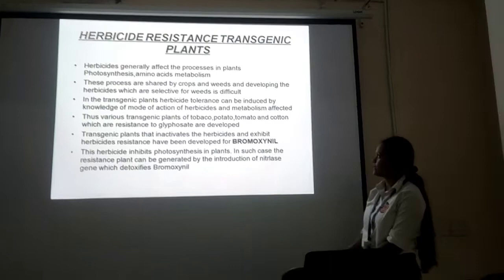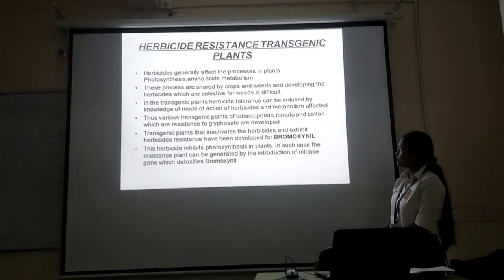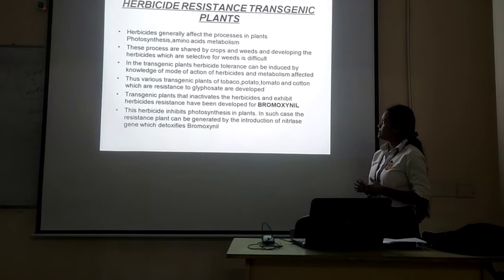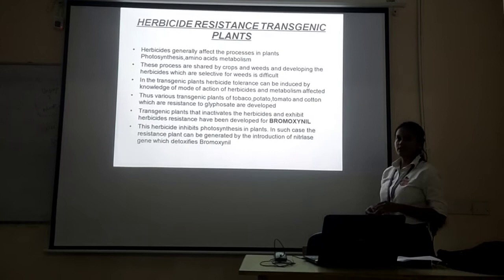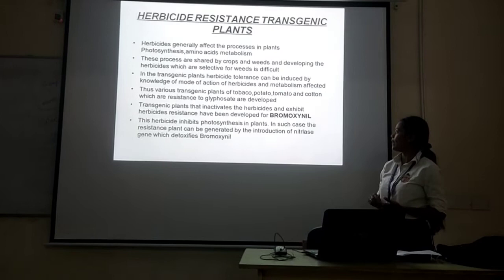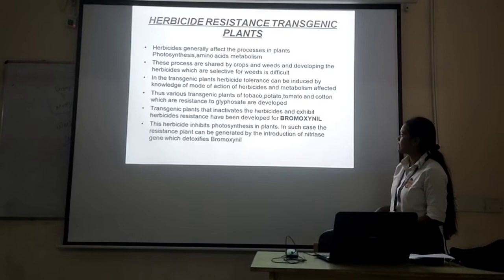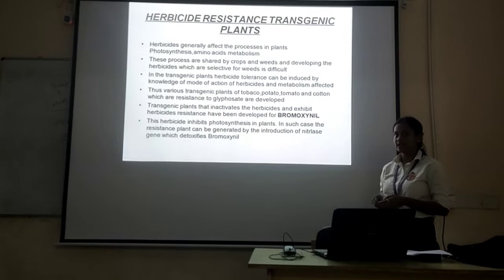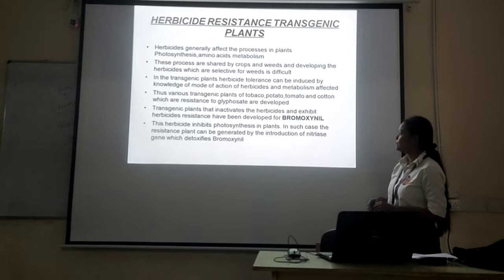Coming on to the next application — herbicide resistance transgenic plants. For this, the EPSPS pathway in plants involves aromatic amino acid biosynthesis. This pathway is shared by crops and weeds, making it difficult to use herbicides selectively. In the transgenic plant, herbicide tolerance can be achieved by introducing modified forms of target enzymes. The herbicide resistance has been developed for Bromoxynil, which is a type of herbicide used in crop protection.